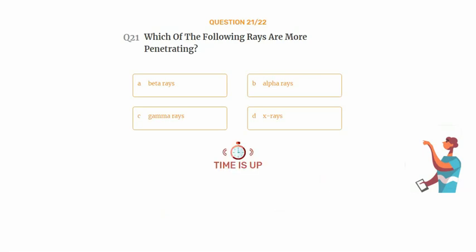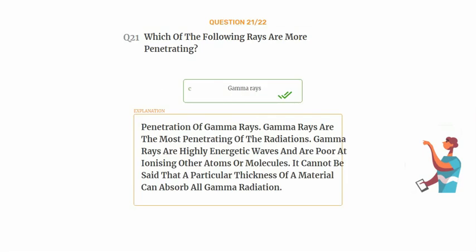The correct answer is Option C: Gamma rays. Gamma rays are the most penetrating of the radiations. Gamma rays are highly energetic waves and are poor at ionizing other atoms or molecules. It cannot be said that a particular thickness of a material can absorb all gamma radiation.